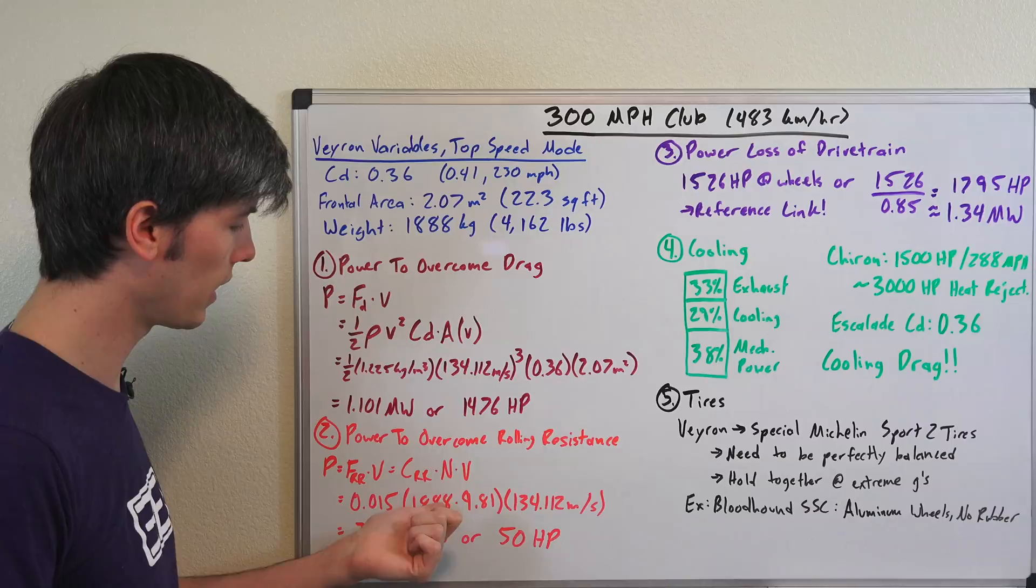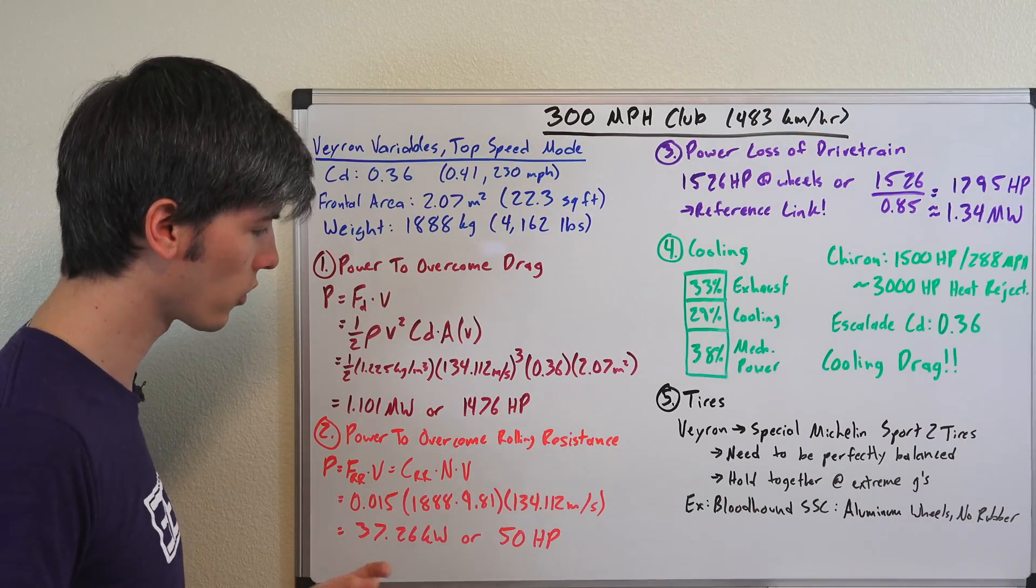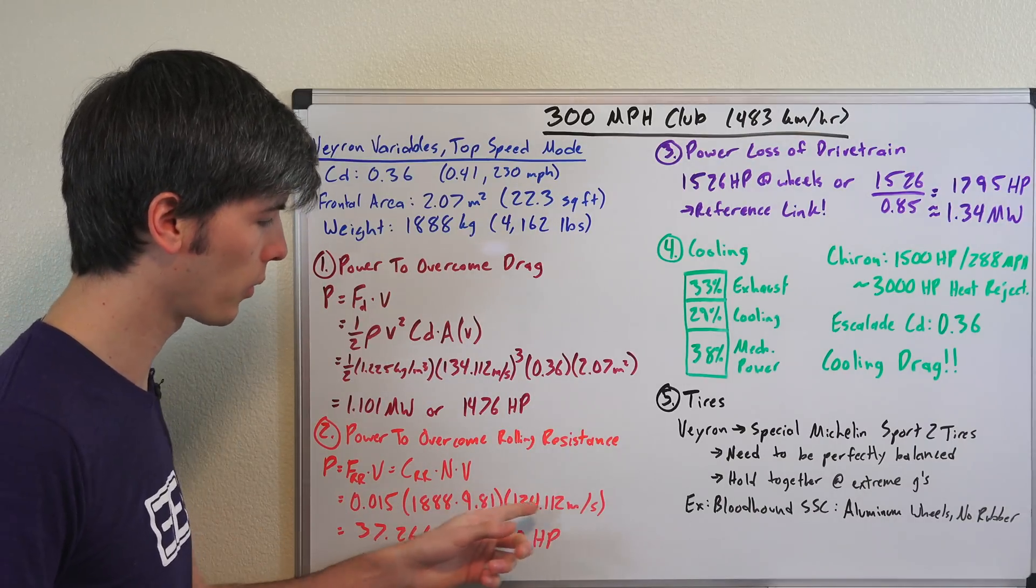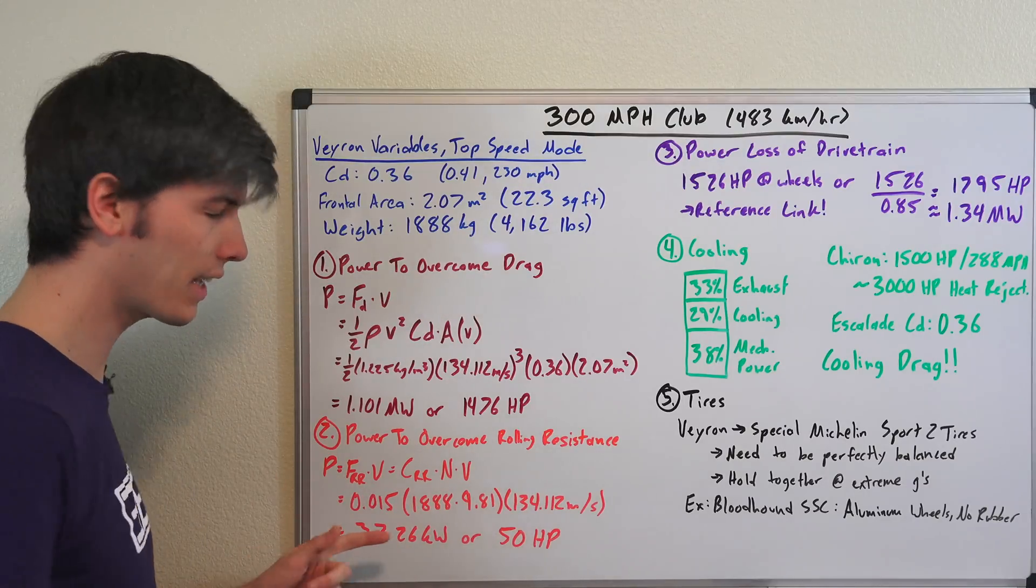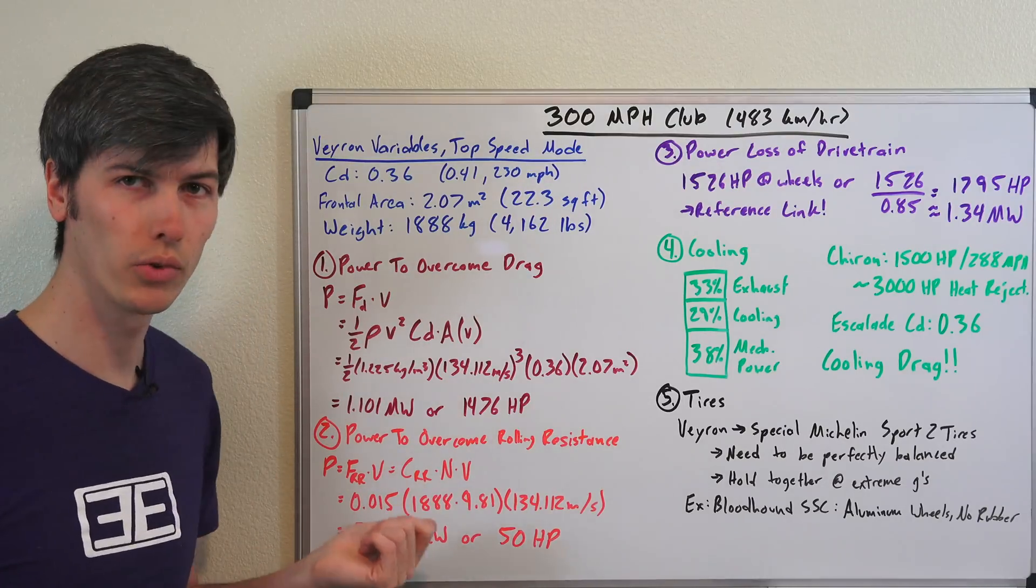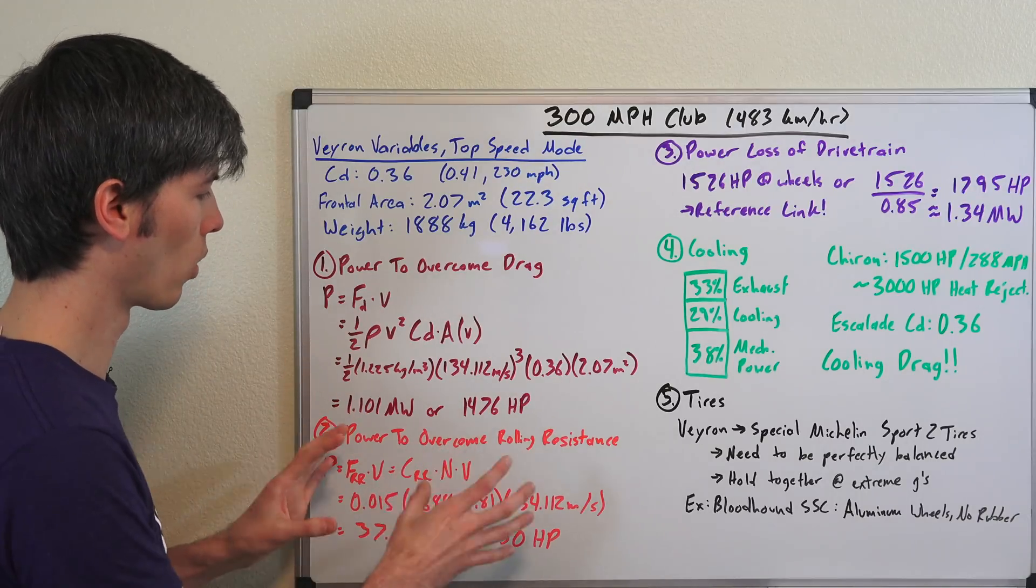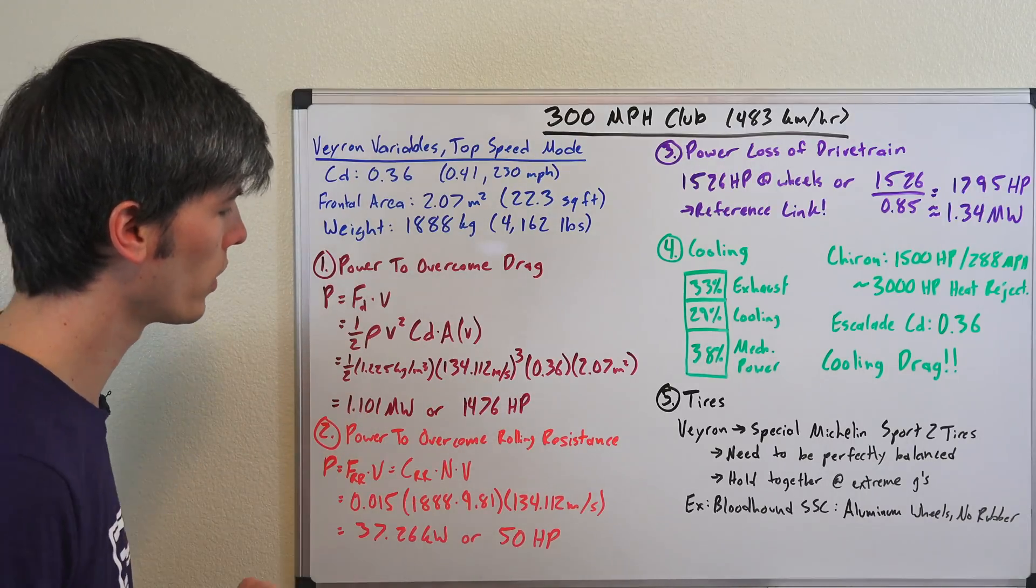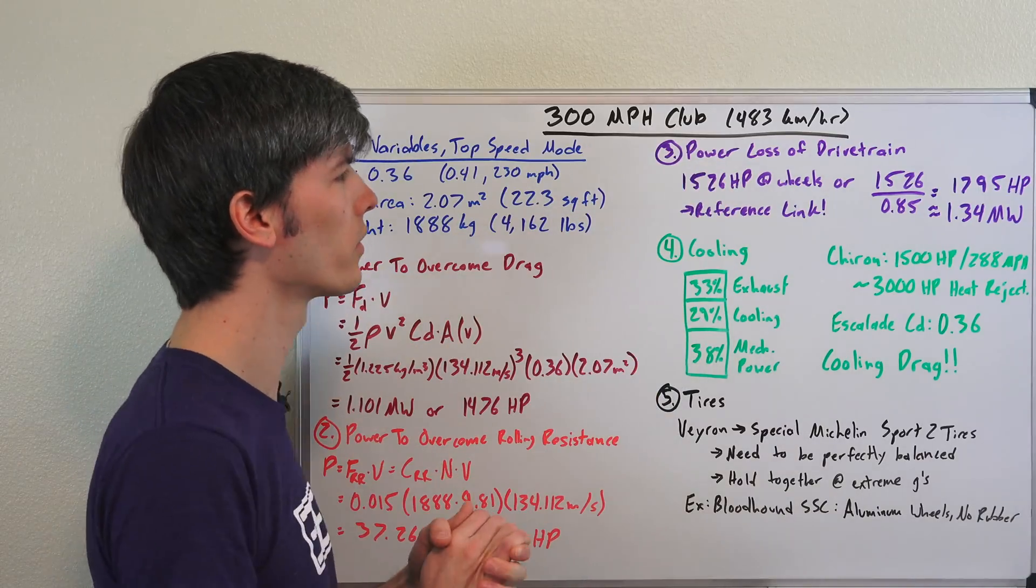Multiplying that by 1888 that's the mass of the vehicle times 9.81 meters per second squared times our top speed of 300 miles per hour or 134 meters per second. That gives us 37.26 kilowatts or about 50 horsepower which we'll need just to overcome rolling resistance. So we can add those two together and we will know that at the wheels we will need 1,526 horsepower.